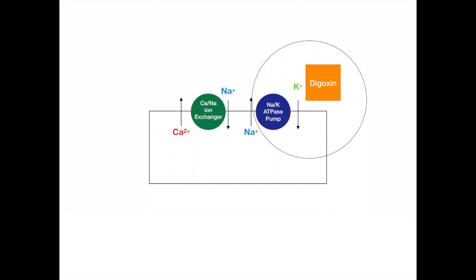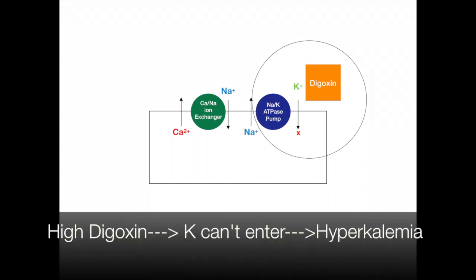On the other hand, when there is a lot of digoxin present, potassium cannot enter the cell. So increased digoxin levels can lead to hypokalemia.